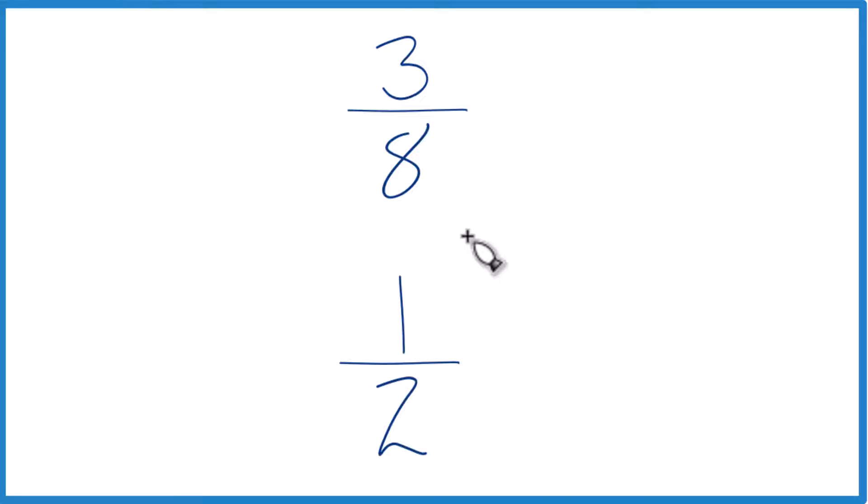The other way is we could find a common denominator. So if we had the same denominators, we just compare the numerators, and we're done.